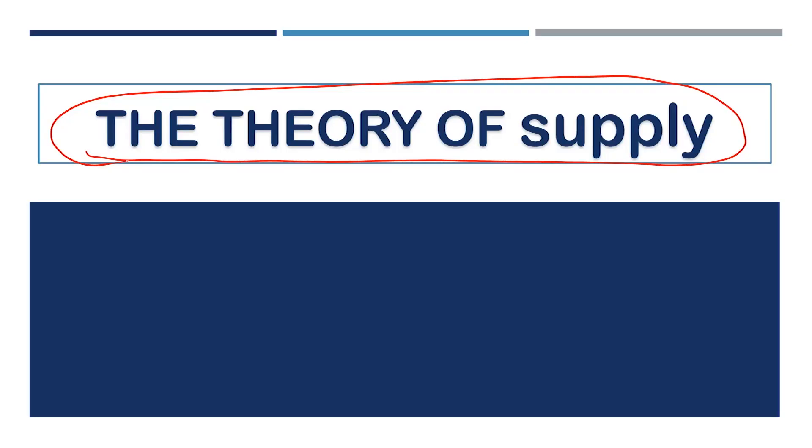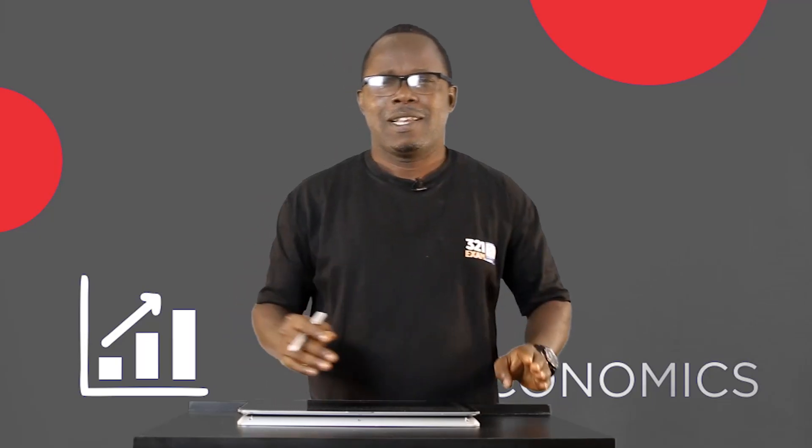Now, the theory of supply. I told us in the beginning of demand that they all have a relationship I will refer to as inverse. Demand and supply has an inverse relationship if you look at the way they function. Because supply involves supplying goods when the price of the commodity is higher, but demand will only purchase the commodity when the price is lower. So you can see the difference is there.